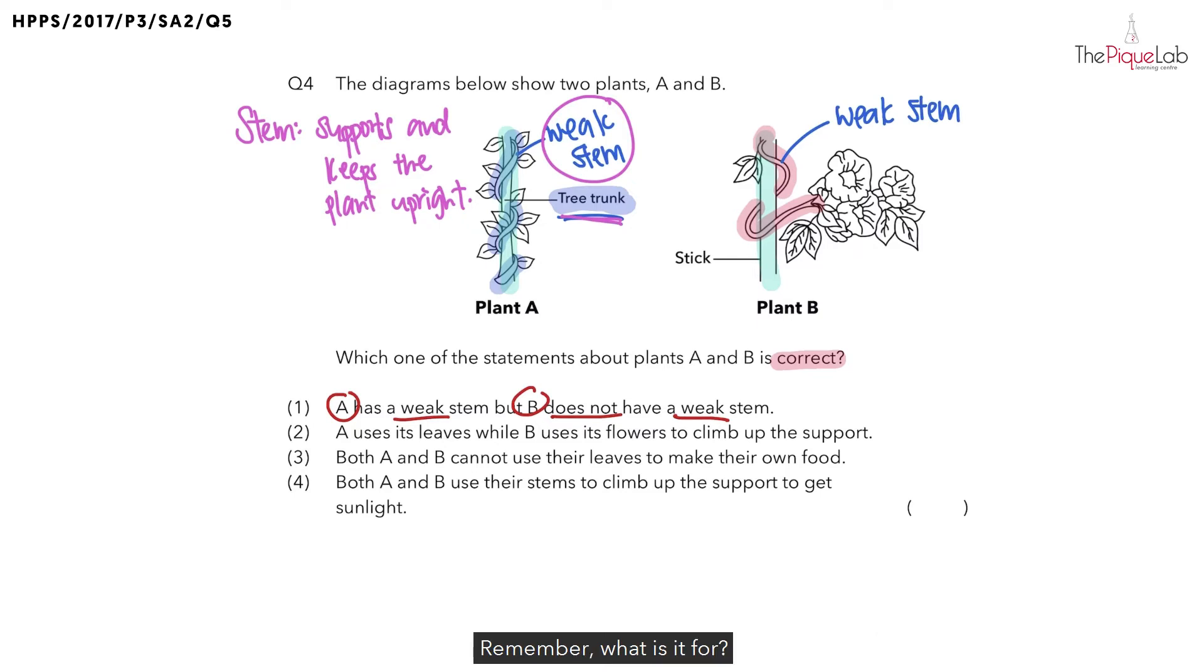Remember what is it for? We have mentioned it earlier right? Growing around the stick will allow the plant to trap maximum amount of sunlight so that the plant can use it to make food during what process? During photosynthesis.